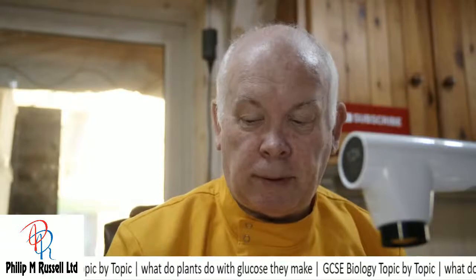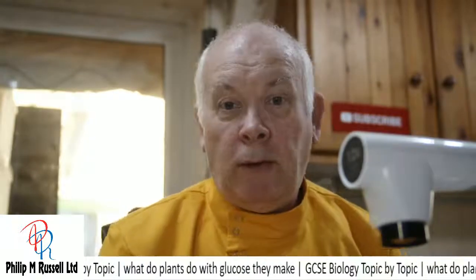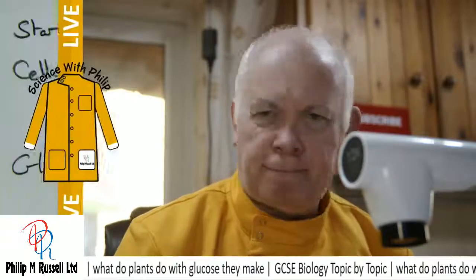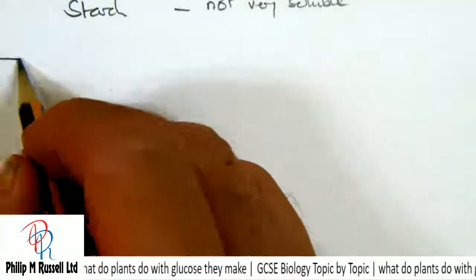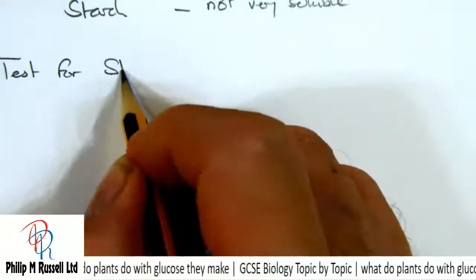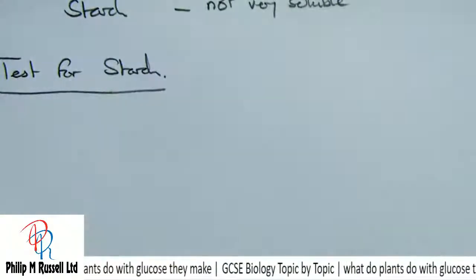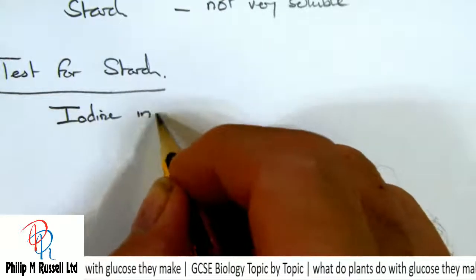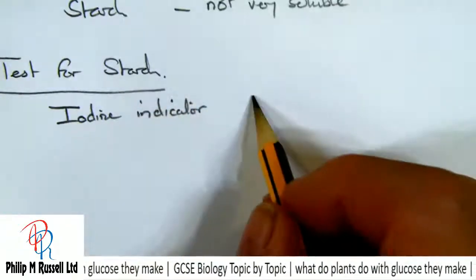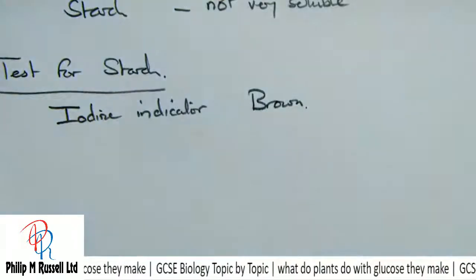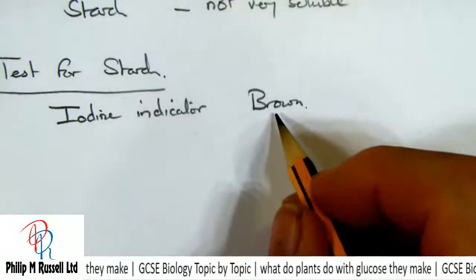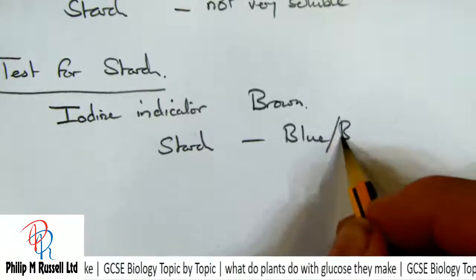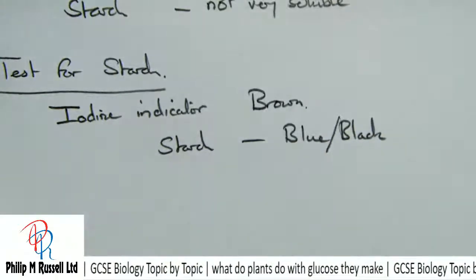Plants make starch because they can store it and it is not osmotically active. When there's lots of light, plants can make lots of starch. The test for starch is using iodine indicator — a brown liquid — and when you put it on starch, it turns a very blue, almost black colour.